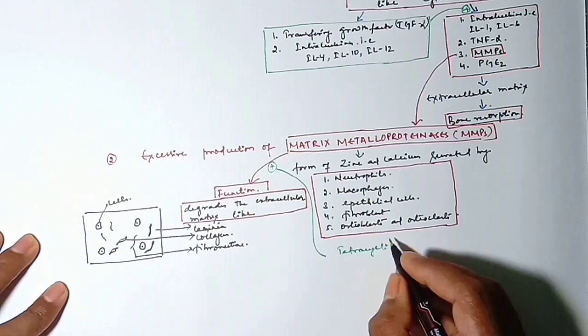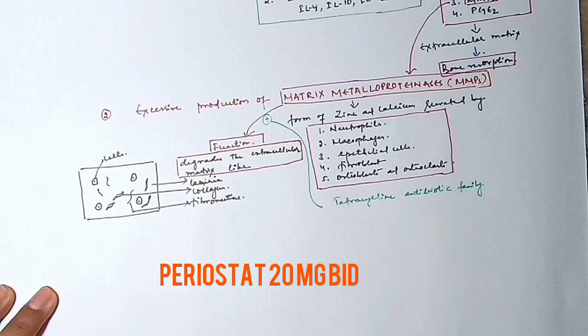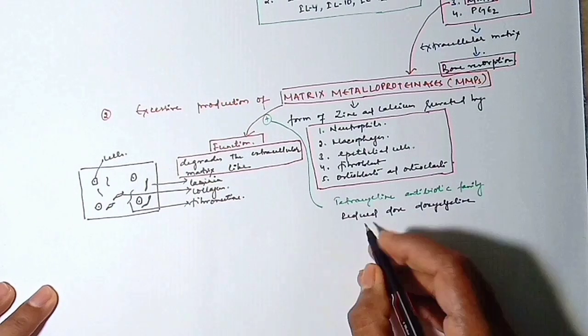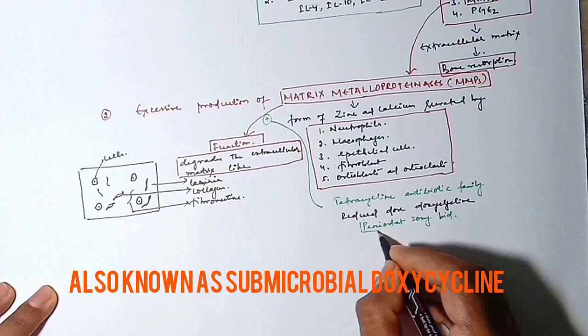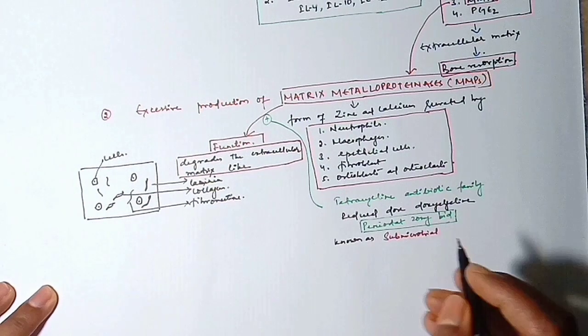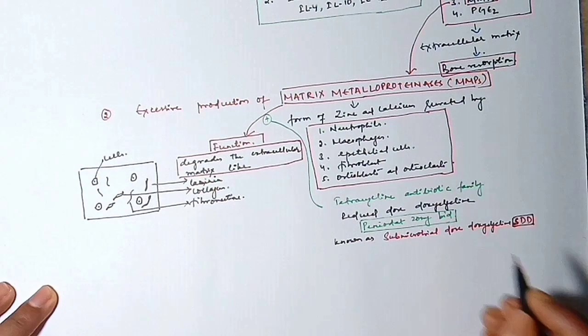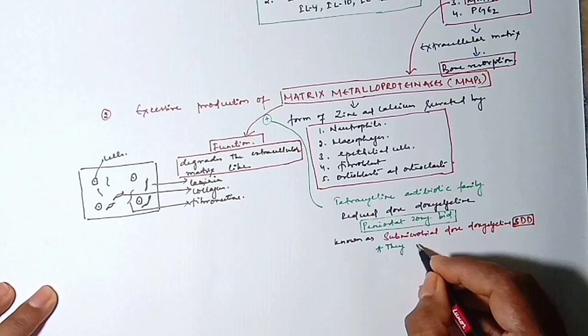We'll give periostat 20 mg BID, also known as sub-microbial dosed doxycycline. They inhibit the MMPs but have less antimicrobial effect. They inhibit the MMPs, but the antimicrobial effect is less in this doxycycline, in reduced dose doxycycline, that is periostat 20 mg.